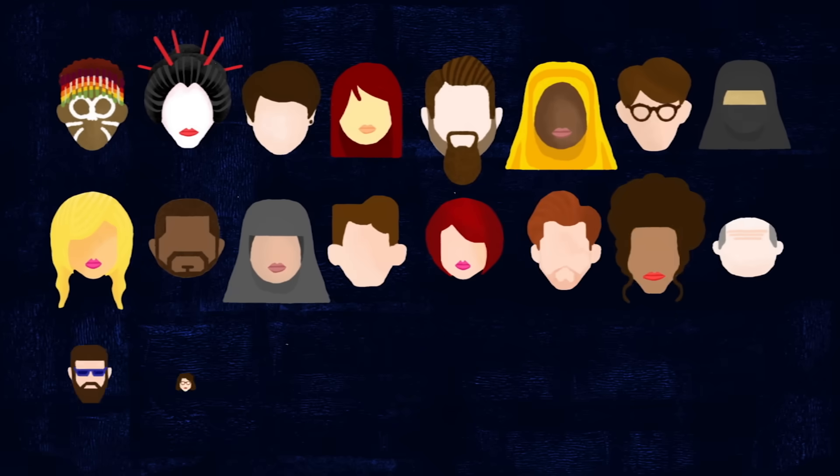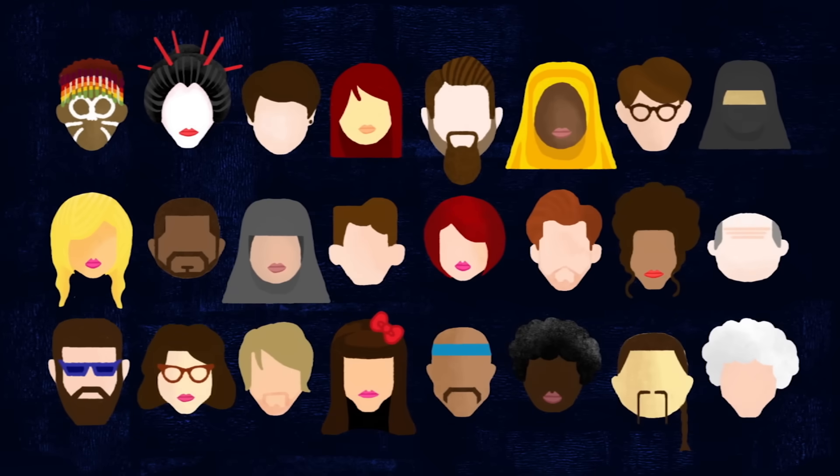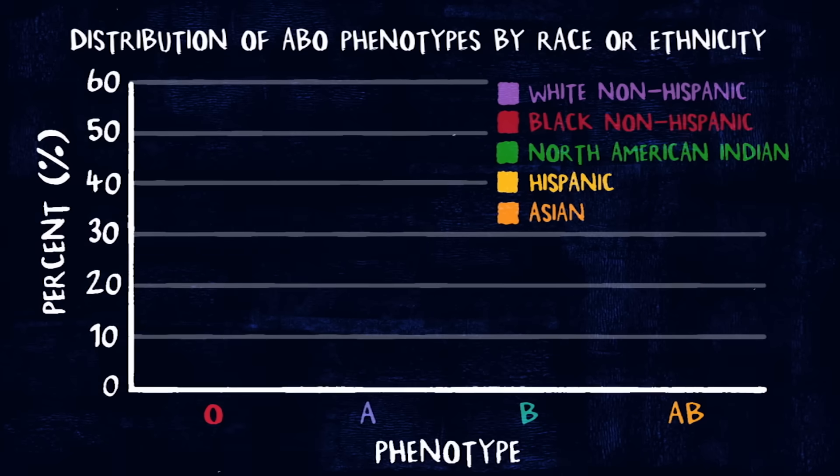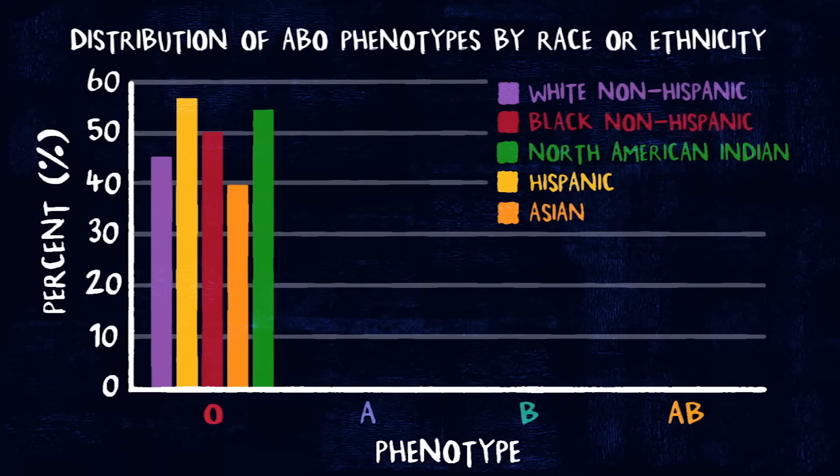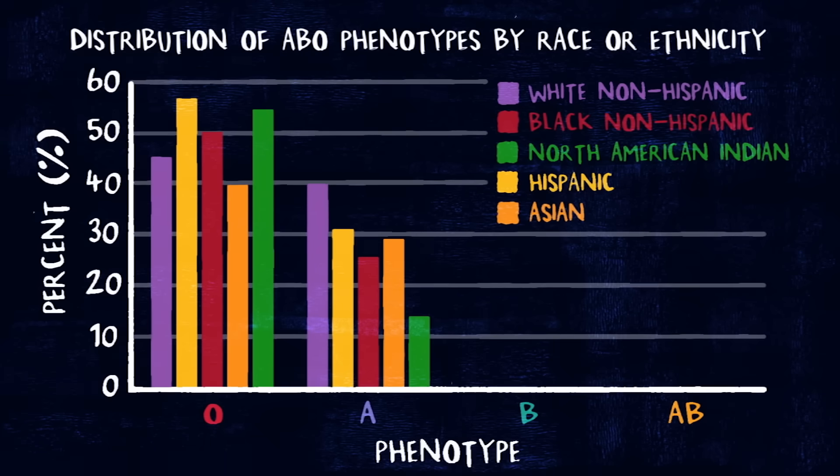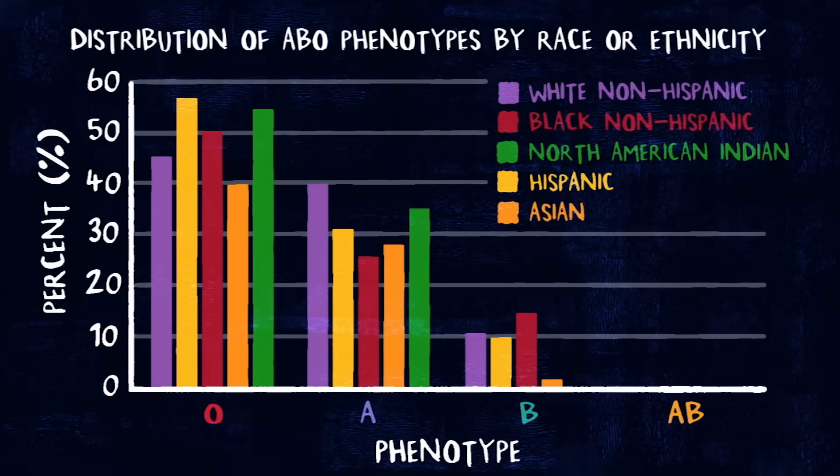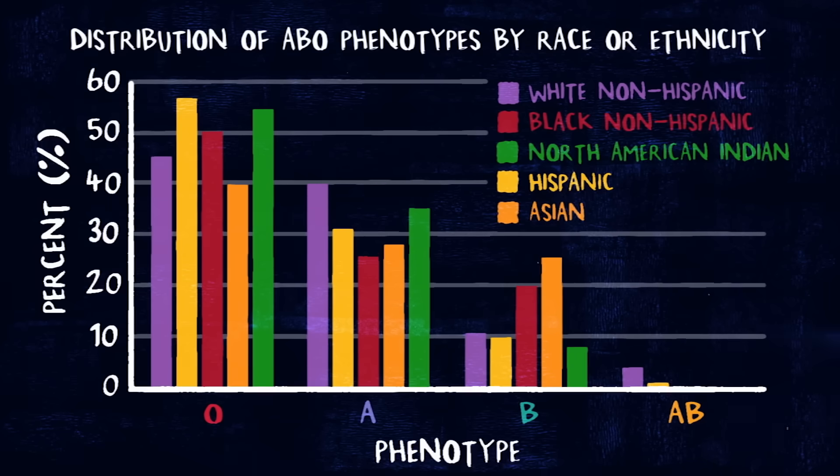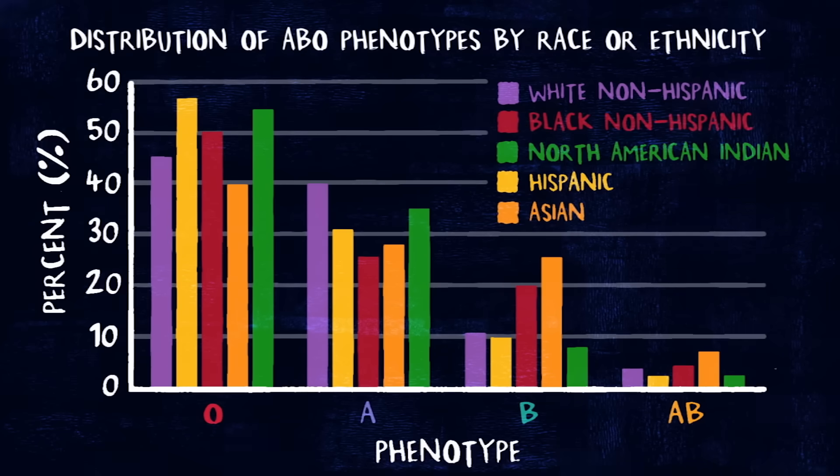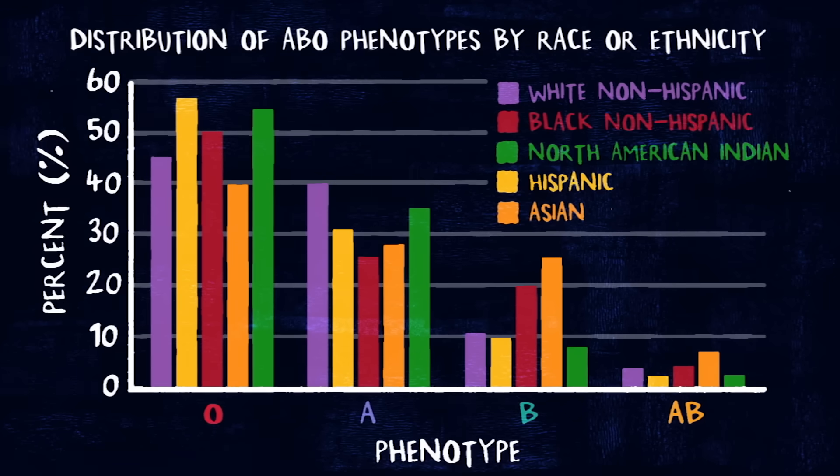Some cultures believe blood type to be associated with personality, though this is not supported by science. And though the proportions of different blood types vary between human populations, scientists aren't sure why they evolved, perhaps as protection against bloodborne diseases, or due to random genetic drift.